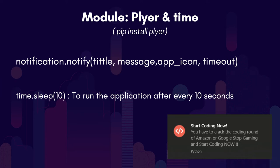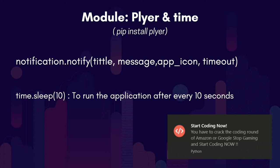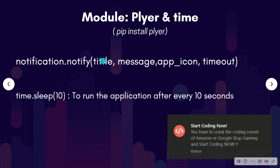The Plyer module is used to access the features of the hardware. This module doesn't come with Python, so we need to install it externally using the pip install command. We are going to use the notify method from the notification class of the Plyer module, and we are going to pass some parameters. We will give a title, message, app icon, and timeout.